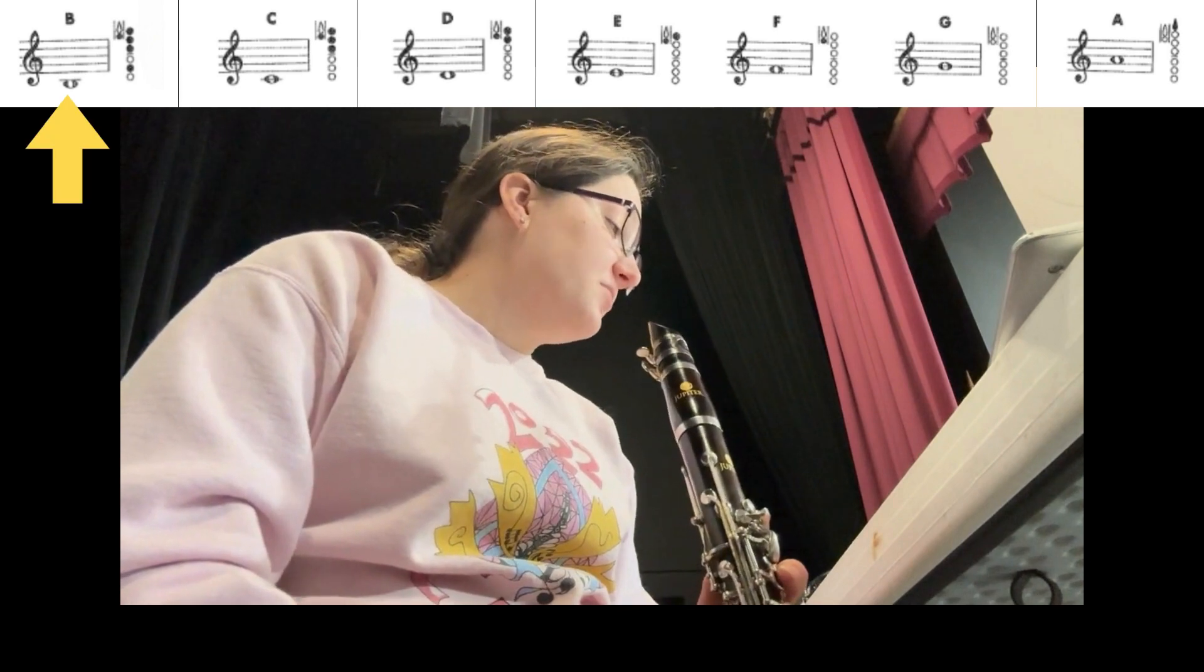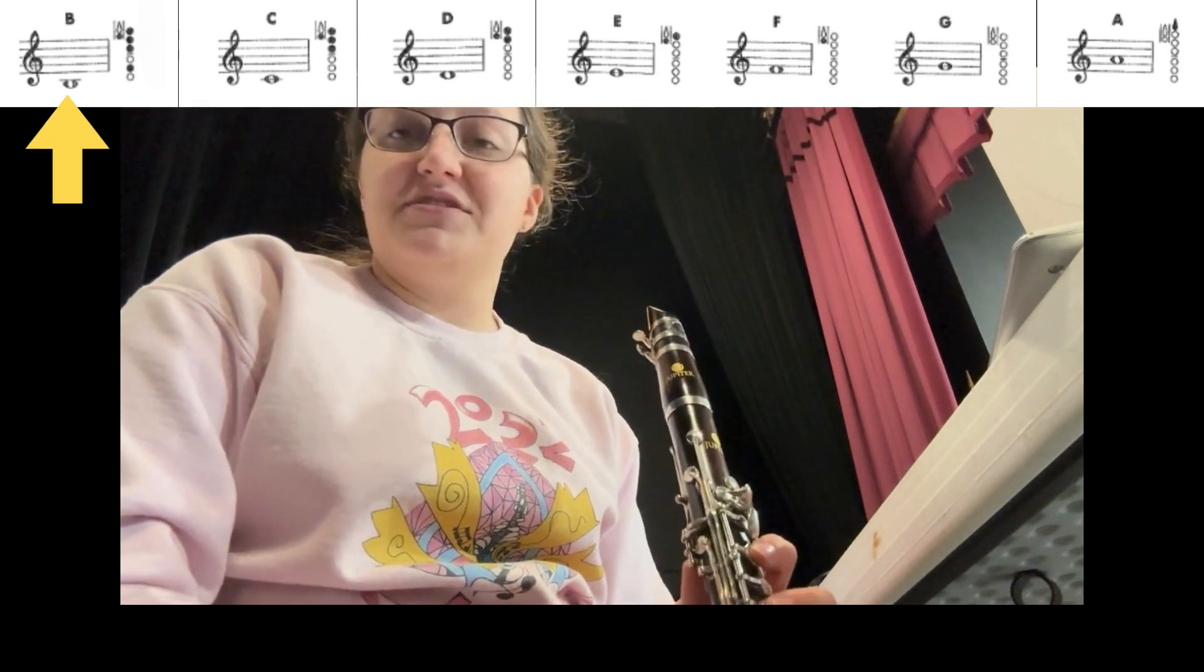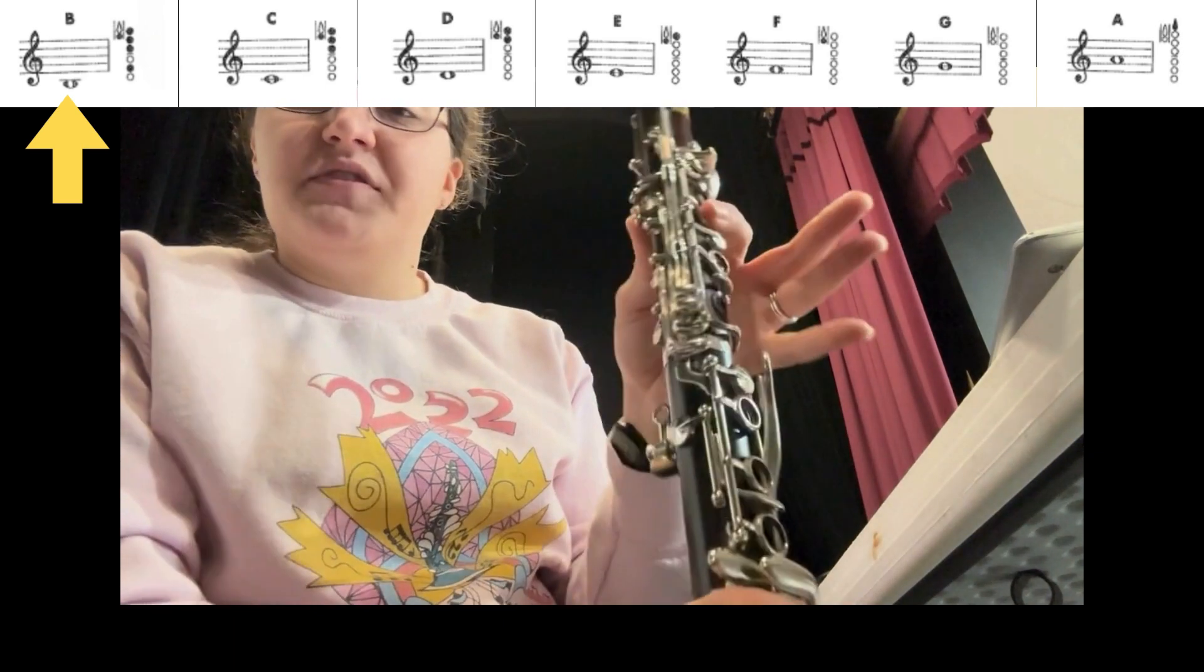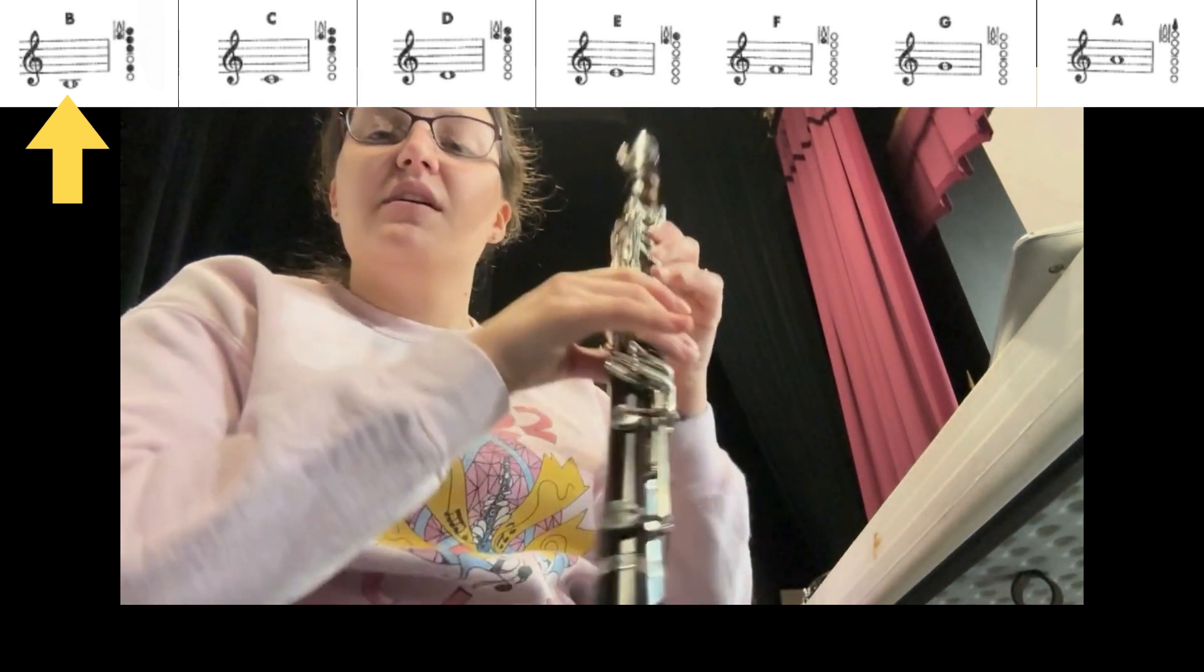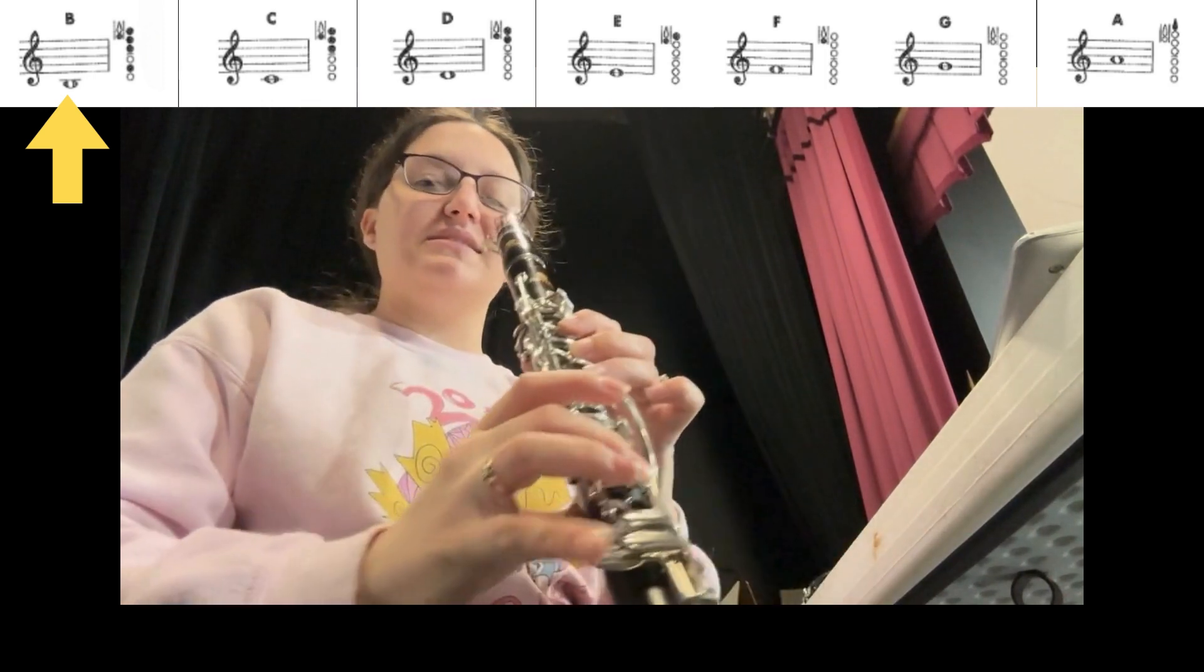Then the next note we have is B, which is the space below that first line, and it is going to be thumb down, first finger down, second finger down, third finger down, and the top hand. Then our bottom hand is going to be the middle finger down, and it will sound like this.